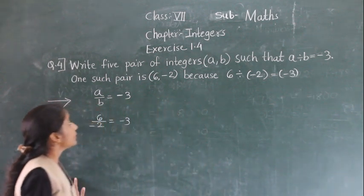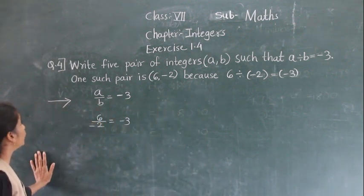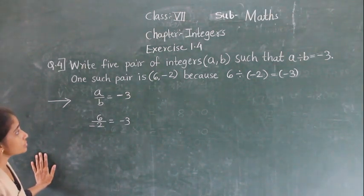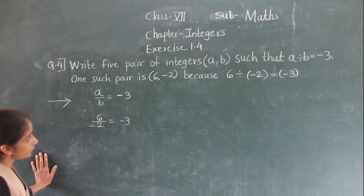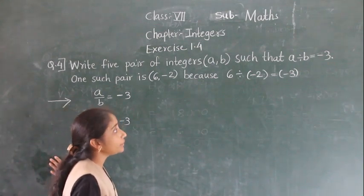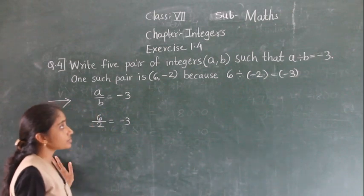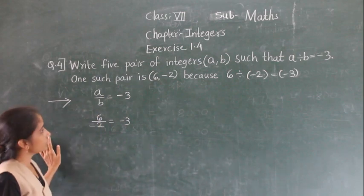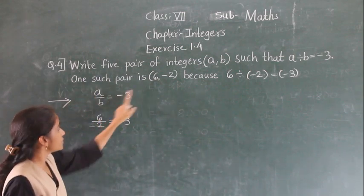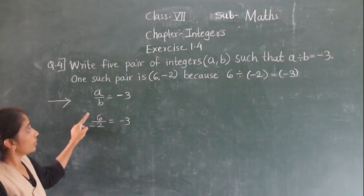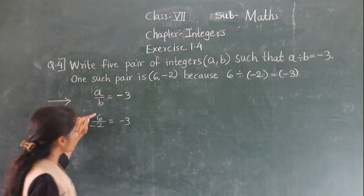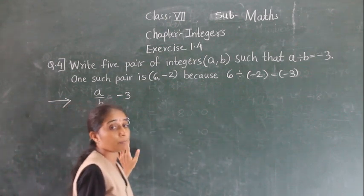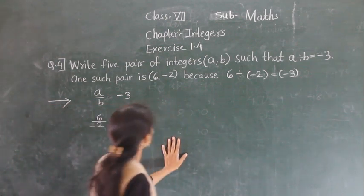Hello everyone. Let's see exercise 1.4, question number 4. Write 5 pairs of integers A and B such that A divided by B is equal to minus 3. One such pair is 6 and minus 2, because 6 divided by minus 2 is equal to minus 3. We have to find the pairs of integers.